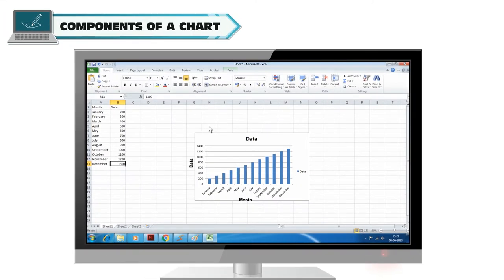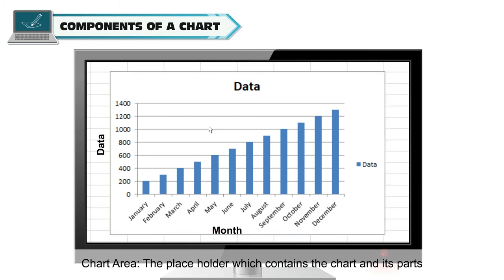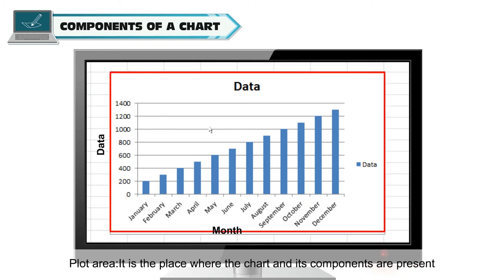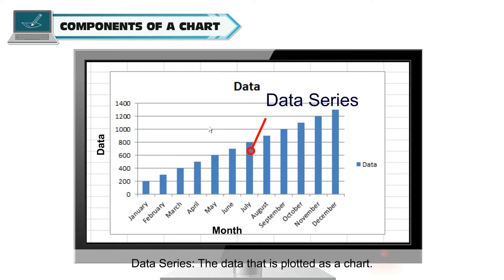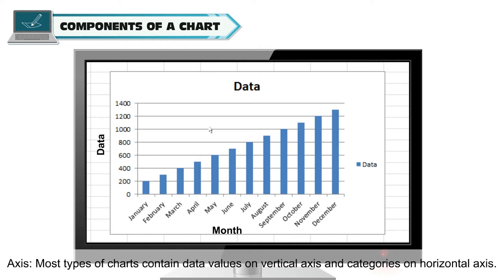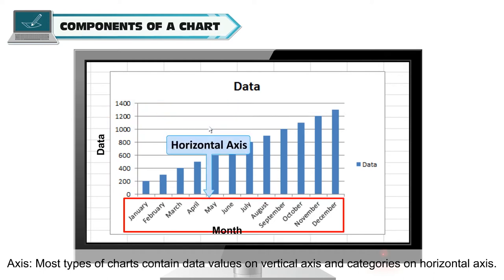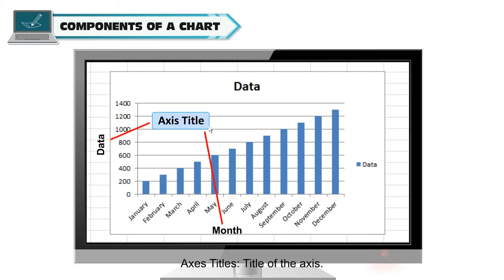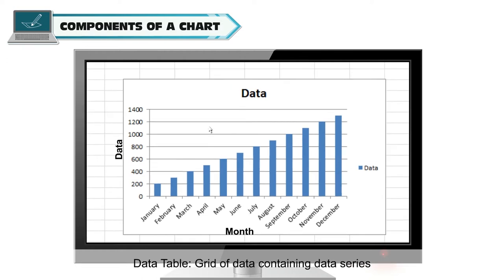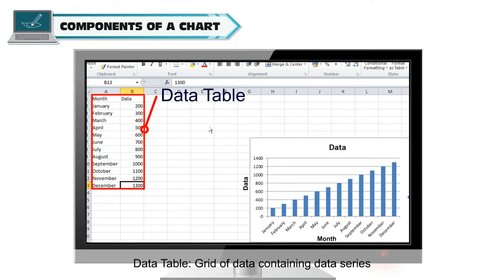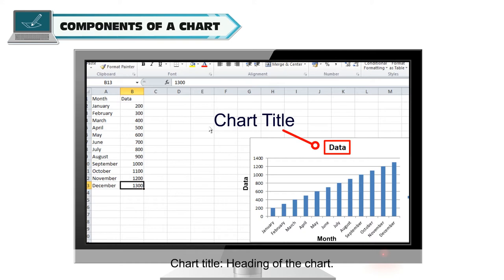Components of a chart: Chart area is the placeholder which contains the chart and its parts. Data series is the data that is plotted as a chart. Most types of charts contain data values on the vertical axis and categories on the horizontal axis. Axis title is the title of the axis. Legends are identifiers used to identify each data series. Data table is a grid of data containing data series. Chart title is the heading of the chart.